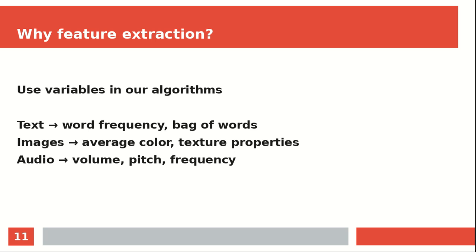So we can extract numeric data from this data — so-called features. And these features are used to train machine learning algorithms. We do not give the raw data to it, because the raw data doesn't make sense to a computer. We just want specific features in order to make good predictions or classifications.